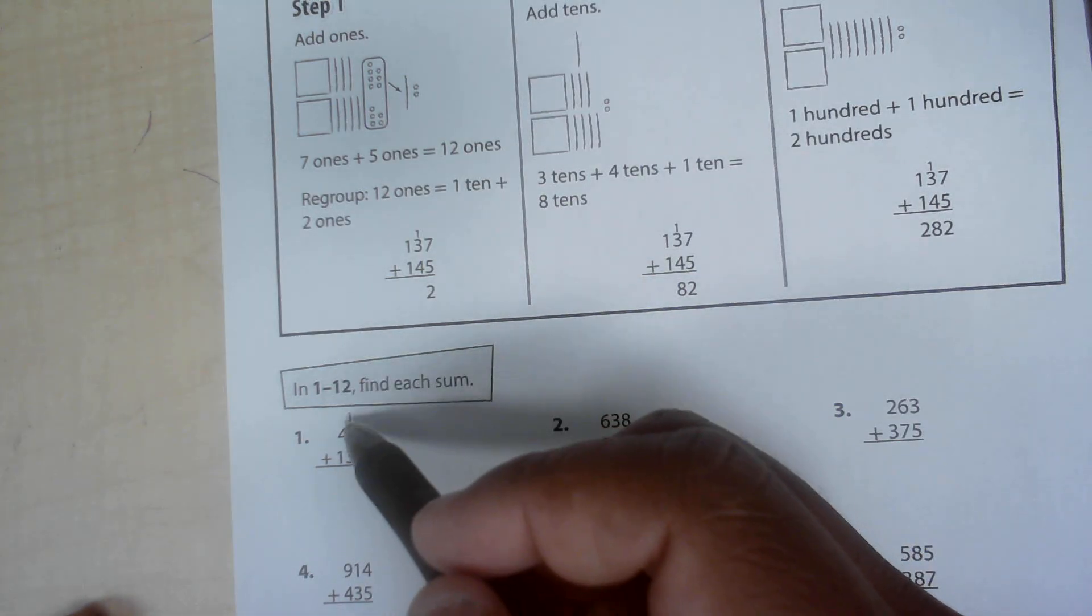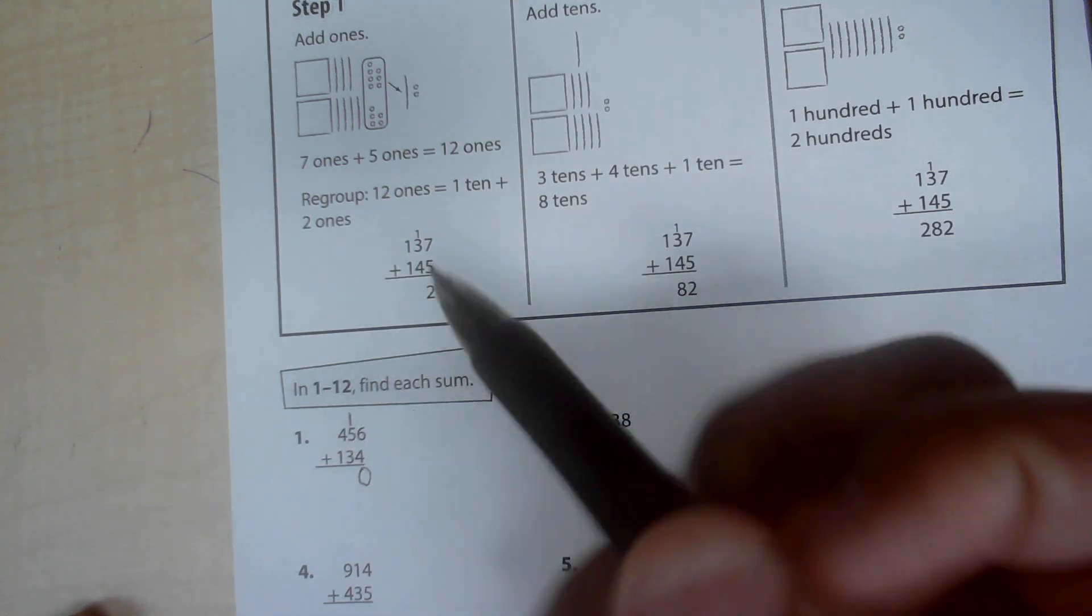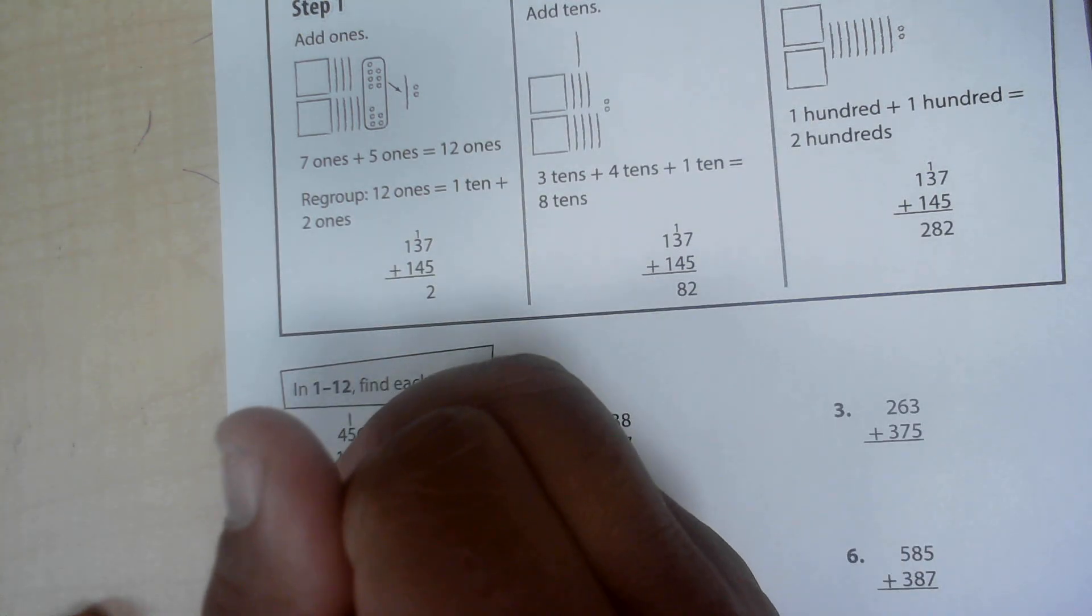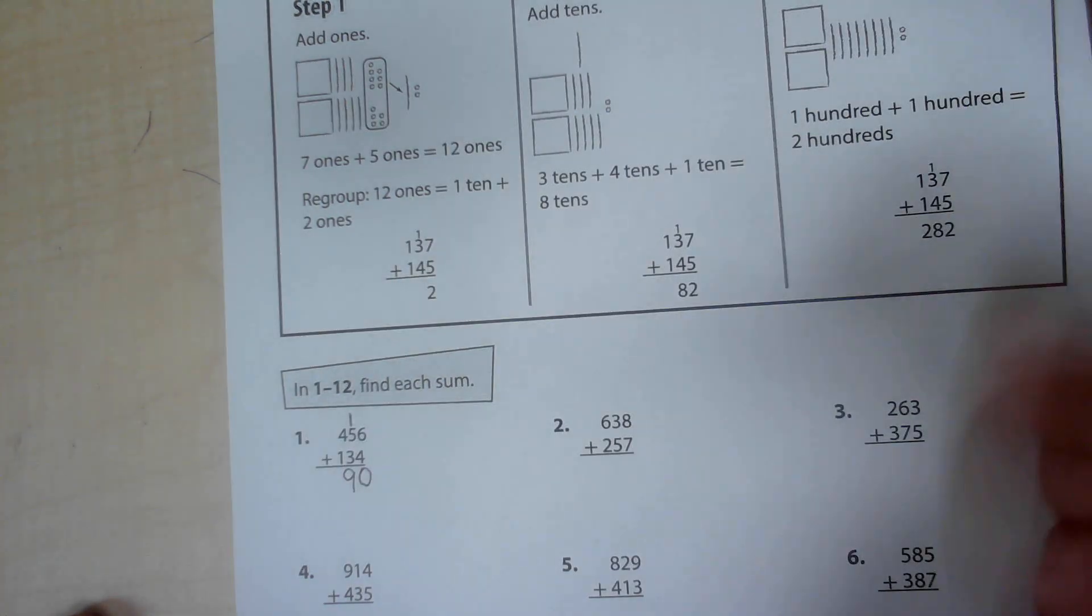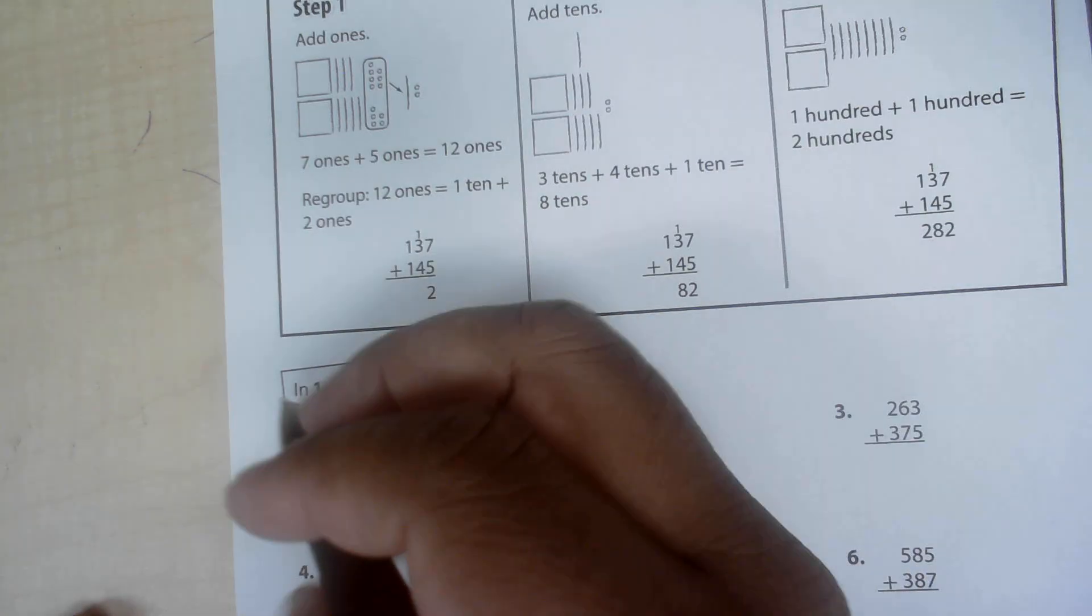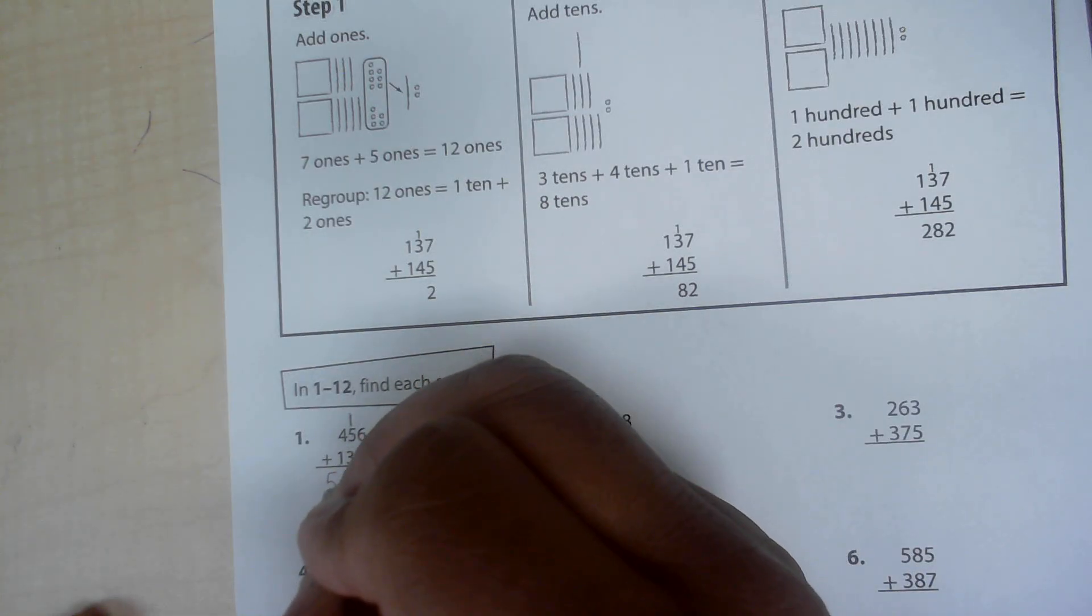Now we add the tens. One, five, and three is nine tens. That's less than 10, so we keep going. We add the hundreds. Four and one is 500, 590.